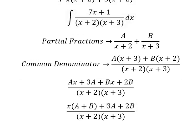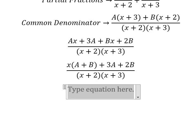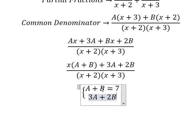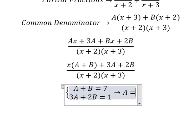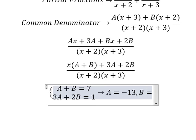And now, we create the system of equations. And now, we need to find the solutions of A and B. So A equals to negative 13, B equals to 20.